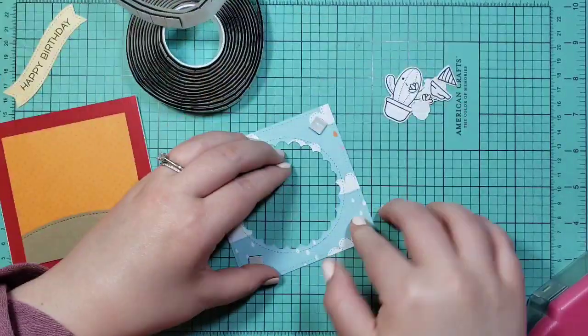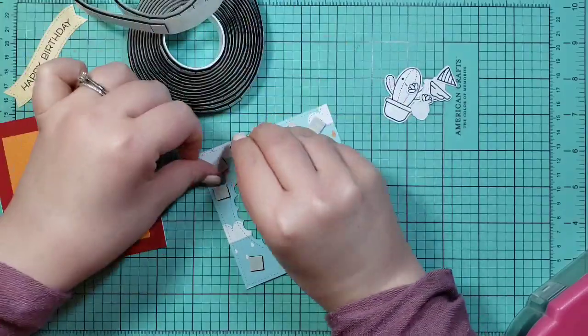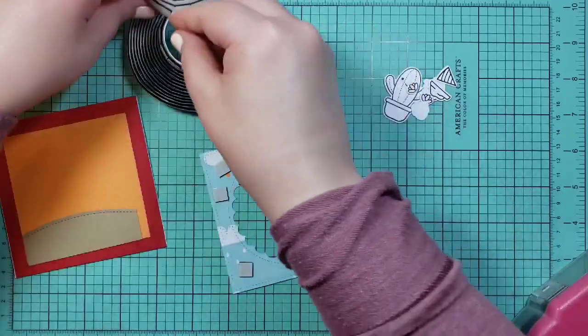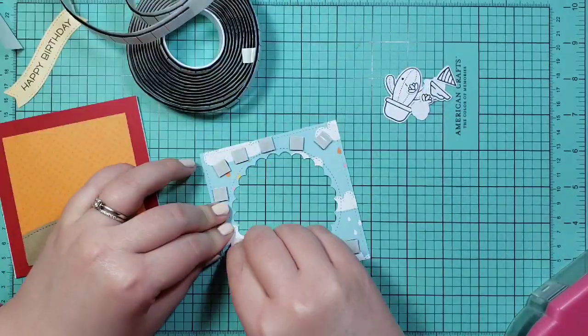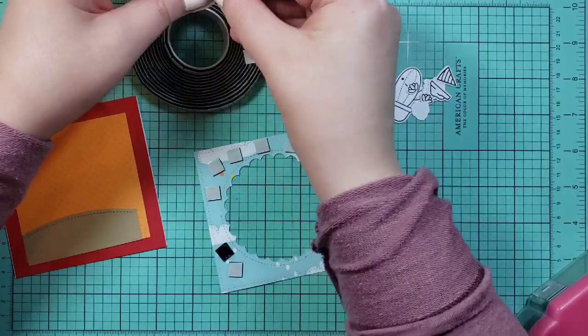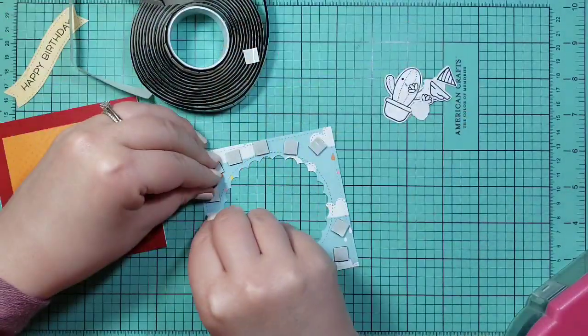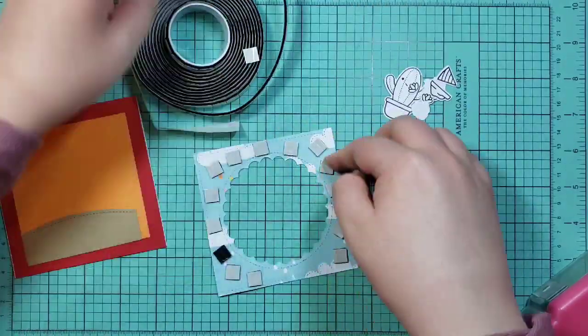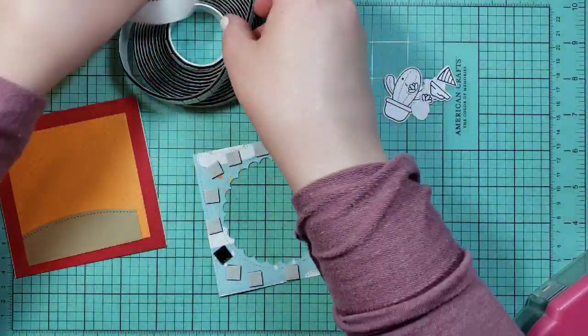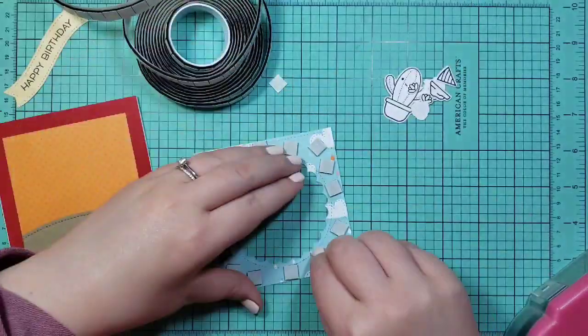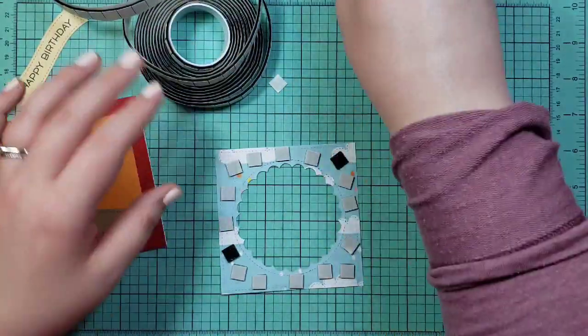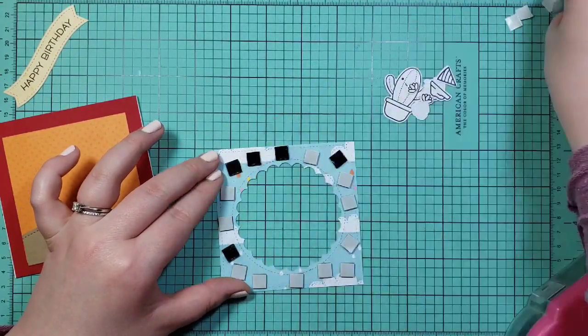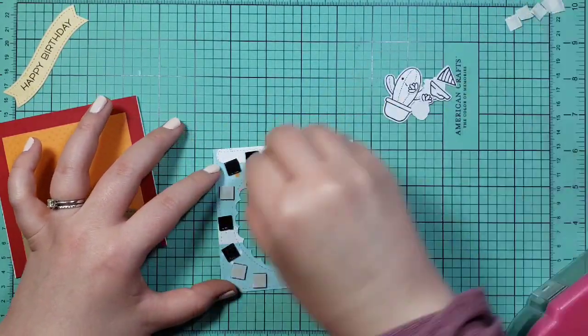I'm going to use the black foam squares that were included in the kit and put those all around this frame so that it'll be lifted up. We're just putting the cactus and his rock and his cake and his presents and stuff inside of the circle, and even if I had to tuck something in, this will be raised up so that would be easy enough.